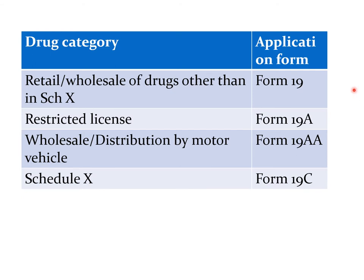This is a summary of the forms in which applications are made for obtaining a license to sell from the licensing authorities. If a person wishes to have retail or wholesale of drugs other than Schedule X, they should apply in Form 19. If a restricted license is required for sale of drugs belonging to Schedule X, then Form 19A is the application form. If a wholesaler license is required, the application should be made in Form 19A. For sale of drugs belonging to Schedule X, the form for application is Form 19C.